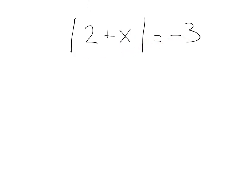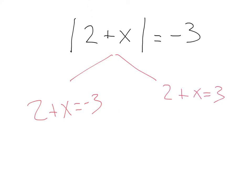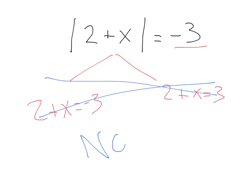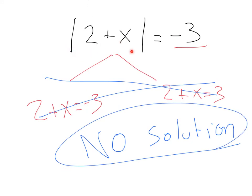Here we've got absolute value of 2 plus x equals negative 3. Remember — whenever we have an absolute value equal to a negative number, we have no solution, because we can never be a negative distance from zero. So the real answer to this one is no solution. Always keep your eye open whenever you have an absolute value equal to a negative. These are probably the shortest problems you'll solve — you just write no solution. But they're tricky because a lot of people accidentally solve them as if the value were positive, so watch out for those.